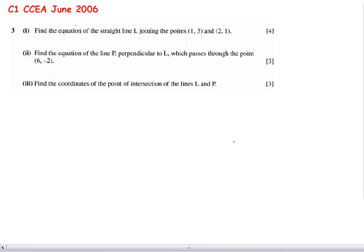Okay, this first question is about finding the equation of a straight line between two points. And if we know that the general equation of a straight line is y equals mx plus c, where x and y are your x and y coordinates, m is your gradient and c is your y-intercept.